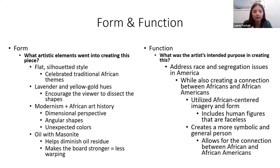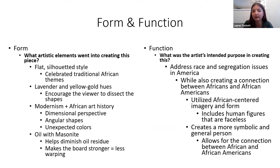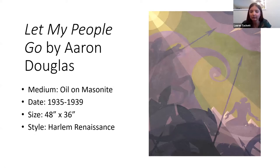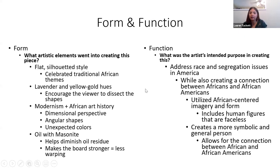For form, Douglas used a flat, silhouetted style. A big thing for Douglas was connecting African American artists with African art to create unity between them. The flat silhouetted style is actually part of traditional African artistic themes. He used lavender and golden hues to show how nature contrasts with the people and highlight the different aspects of the piece.